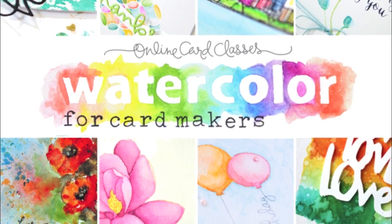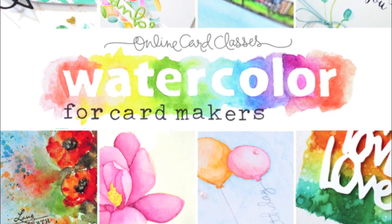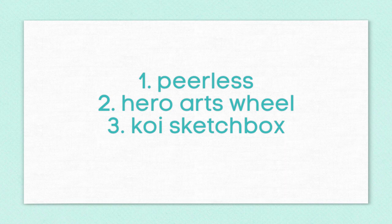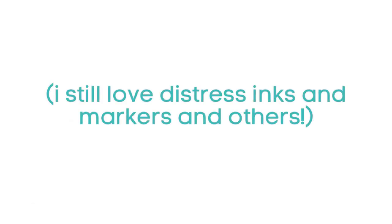In that class I'm going to be using lots of different watercolors, but I have three that I seem to reach for the most and I wanted to compare them here. So the three that I'm going to compare in this video are Peerless Watercolor Papers, Hero Arts Watercolor Wheel and the Koi Sketch Box. Now I did want to mention that I still love using Distress Inks and Distress Markers for watercolor. They're fantastic for it and also some other things like Inktense and Twinkling H2O's. But I've been getting a lot of questions about these three in particular so I wanted to compare them today in a video.